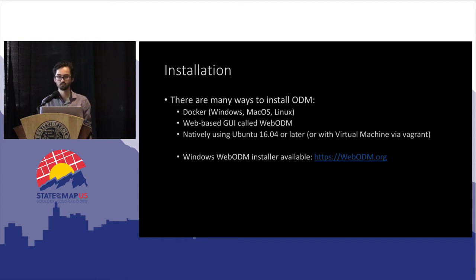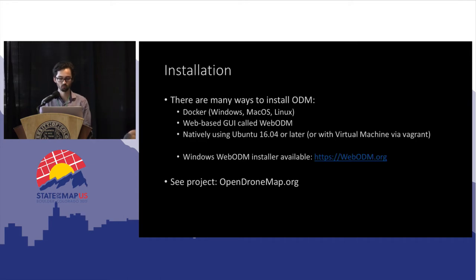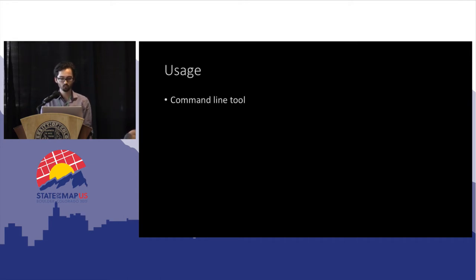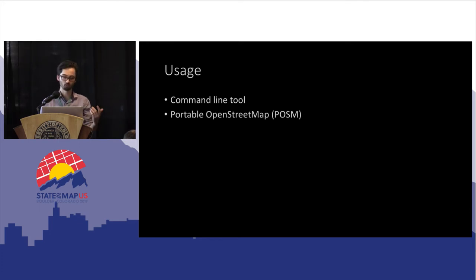There's also a Windows WebODM installer that one of our contributors and core team members has built — it works pretty seamlessly. You can find us at opendronemap.org. Installing it natively requires the command line, so there's a bit of a tech barrier. We've also integrated with Portable OpenStreetMap — I don't know too much about that project, but I know it's been pretty useful for the team.